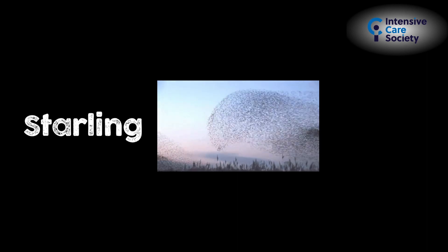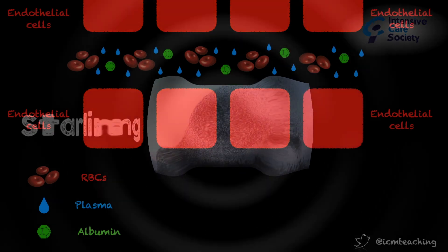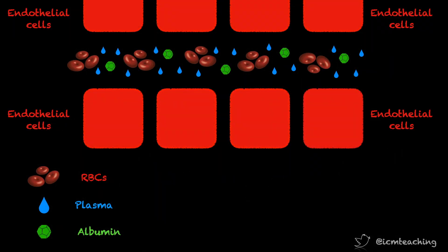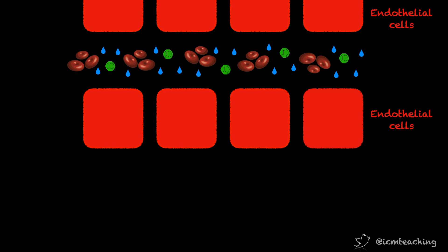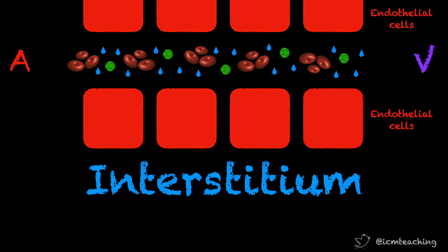In medical school we learned about the Starling model to explain fluid flow across capillaries. Here we have a capillary containing red blood cells, plasma and albumin. These capillaries have an arterial and venous end and are lined with endothelial cells. These cells have gaps in between them with interstitial tissue on the other side. In muscle and connective tissue and the lungs, these gaps are frequent and large. It's in the brain they're infrequent and small, which we know as the blood-brain barrier.